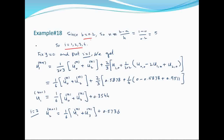Calculate करने के लिए देखते हैं i कितने आएंगे। h=0.2 है तो n = (b - a) / h = (1 - 0) / 0.2 = 5। i की value 1 से 4 तक आएगी क्योंकि internal points पर calculate करना है — boundary values already given हैं।